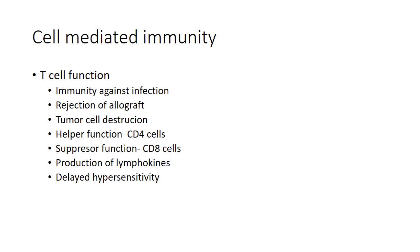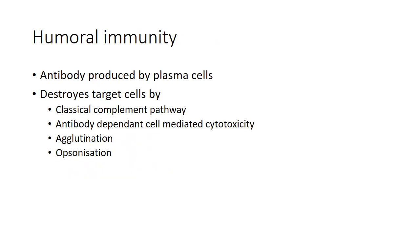Now the hyperfunction of CD4 cells. T cells are a subgroup of cells which carry the CD4 determinant on the cell surface. They are necessary for optimal antibody production by the plasma cells and for the generation of cytotoxic T cells. They are selectively destroyed in AIDS. The suppressor function is carried out by CD8-positive T cells, which downregulate activity in both T cells and B cells. Now the production of lymphokines and the delayed hypersensitivity.